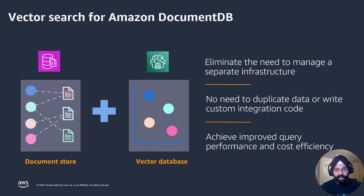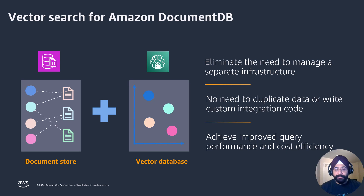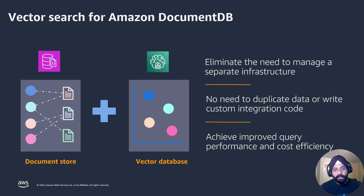What is vector search for Amazon DocumentDB? DocumentDB is a document data store. If you marry that with a vector database, you get vector search for Amazon DocumentDB — the best of both worlds. Especially in the case of AI/ML workloads where unstructured data is prevailing, DocumentDB is very powerful, and mixing it with a vector database makes it even more powerful.